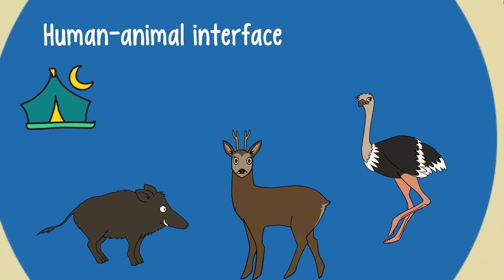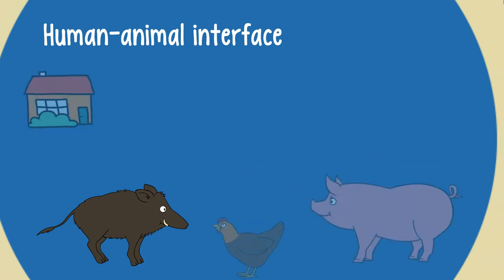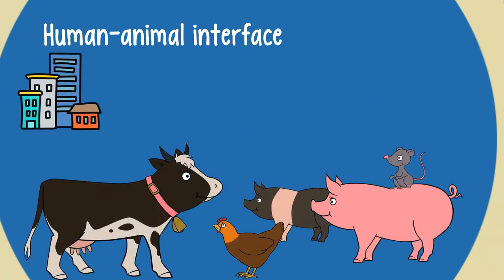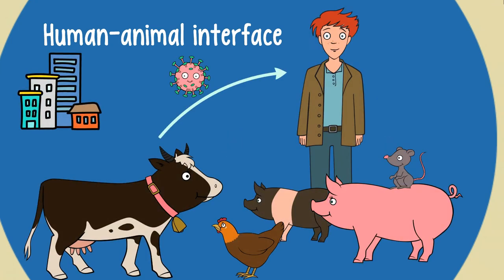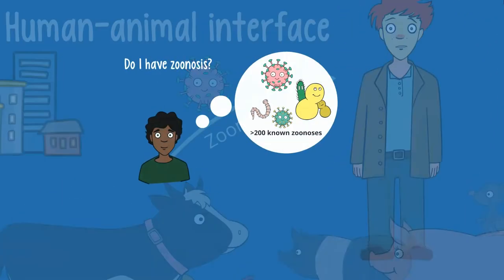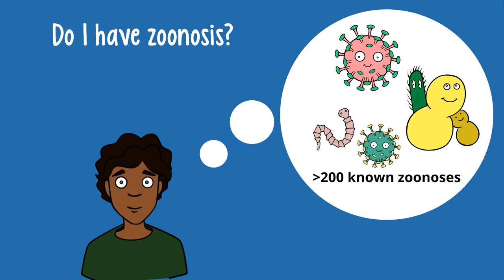Humans have always co-existed with wild and domestic animals. Not surprisingly, we have therefore occasionally been affected by their diseases. A disease or infection that spills over from animals to humans is called zoonosis. Zoonosis take up a large percentage of newly identified and existing diseases in humans. There are currently over 200 known types of zoonosis.